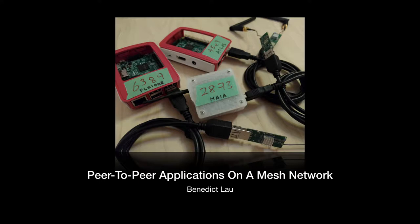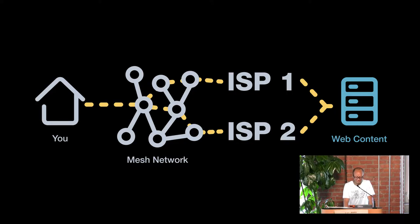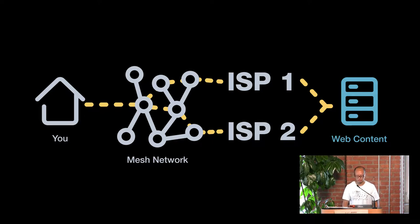So what does that mean? A mesh network is a network where you relay messages through friends, and in an encrypted mesh network you are relaying messages through friends you don't necessarily have to trust.